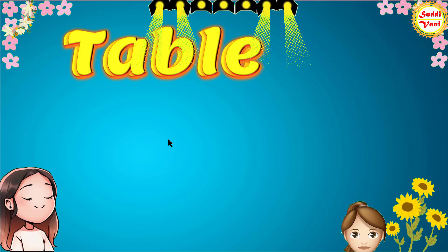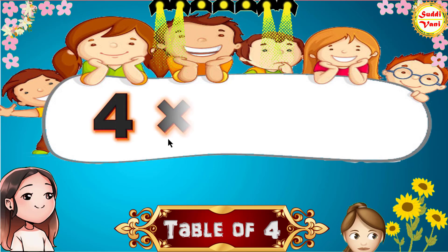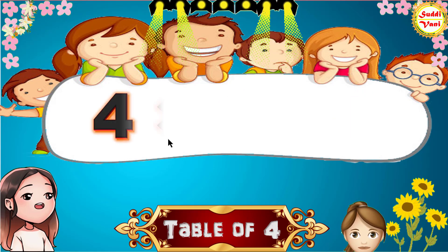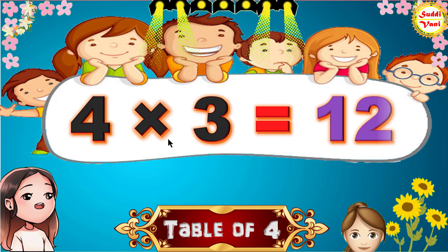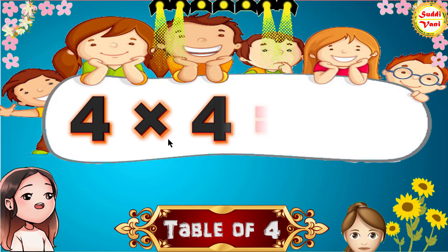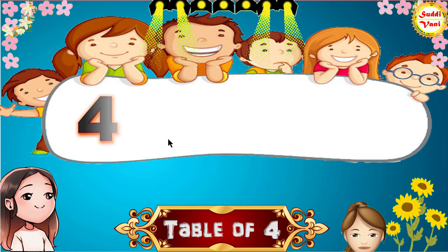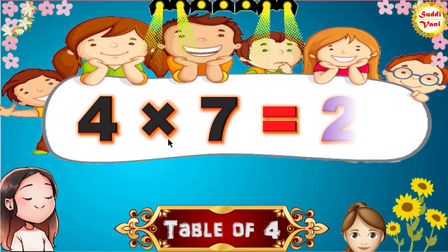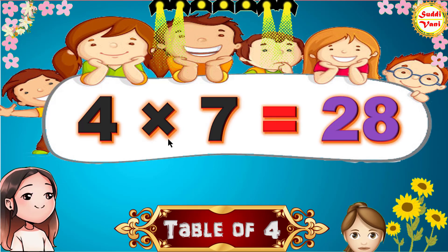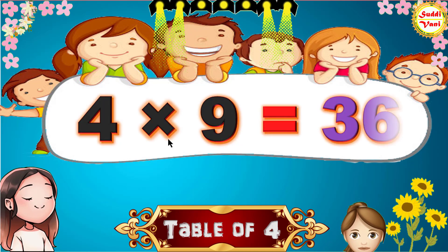Hello Children, we will learn Table of 4. 4 1s are 4, 4 2s are 8, 4 3s are 12, 4 4s are 16, 4 5s are 20, 4 6s are 24, 4 7s are 28, 4 8s are 32, 4 9s are 36.